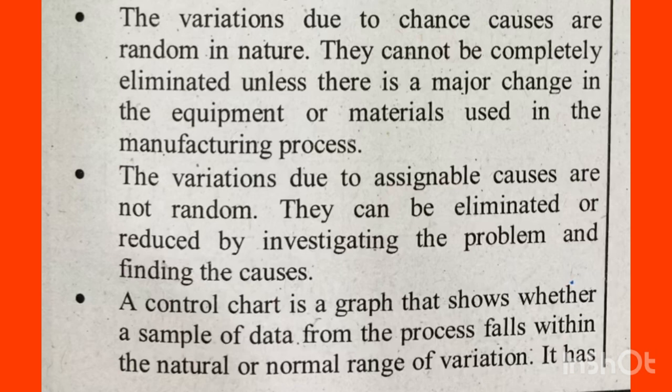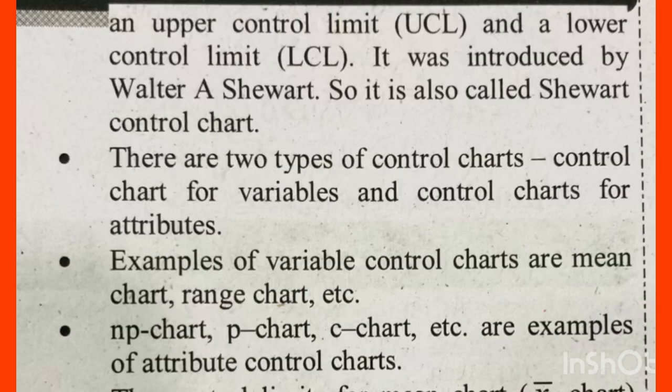Control chart — what is a control chart? A control chart is a graph that shows whether a sample of data from the process falls within a natural or normal range of variations. It has an upper control limit UCL and a lower control limit LCL. It is also called a Shewhart control chart.